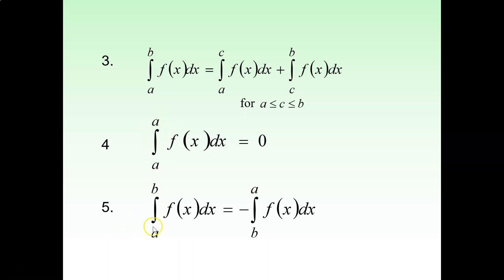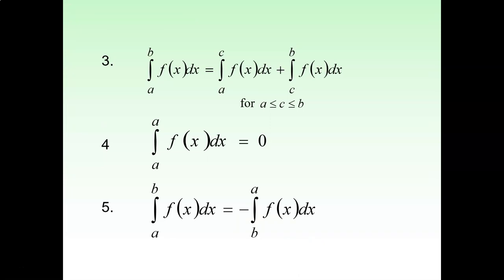The fifth property is: the integration from a to b of f(x) dx will become the negative of the integration from b to a of f(x) dx — when you interchange the values. If integration starts from a to b, and you reverse it to b to a with the same function f(x), you will get a negative sign at the front. That's the fifth property for definite integrals.